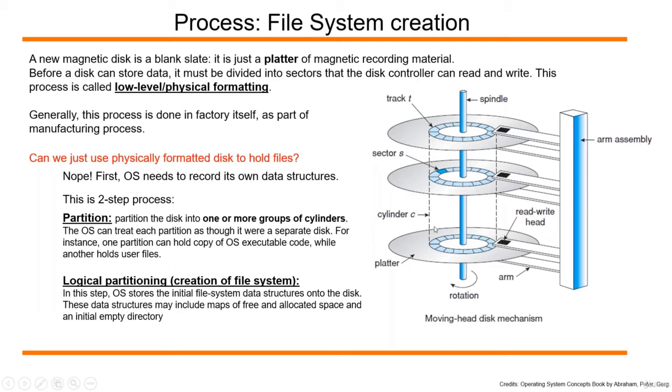Once I partition my disk, the next step is the operating system stores the initial file system data structures on the disk or that partition. These data structures may include maps of free and allocated space and an initial empty directory.